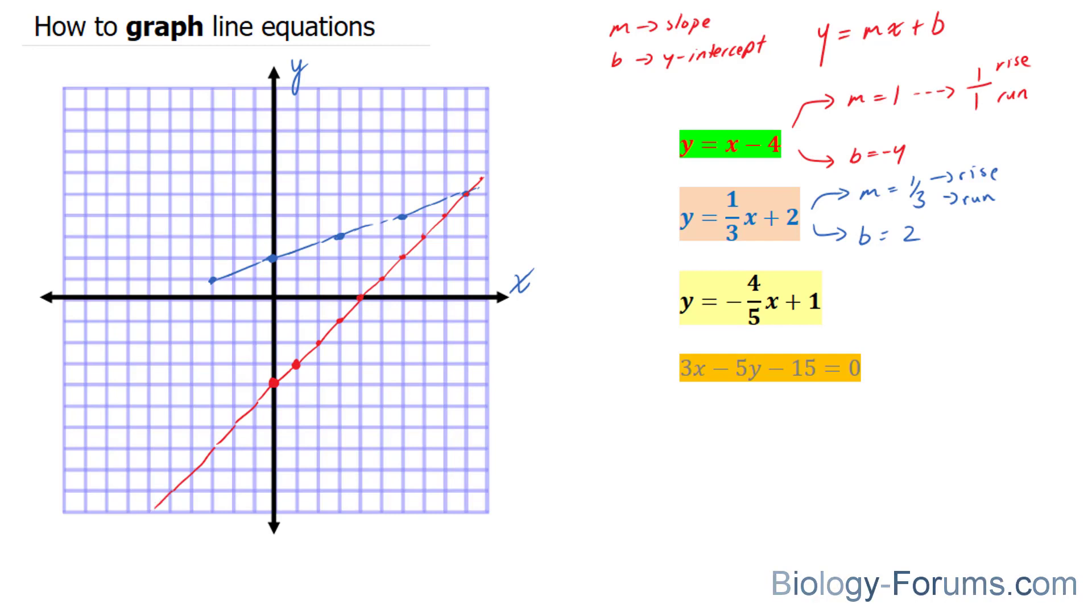Now we're going to move on to the next one. In this case, once again, it is in slope y-intercept form. It's in this format, which is great. But this time, our slope is negative 4 over 5. And our run is still a positive number at 1.